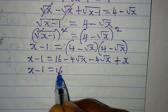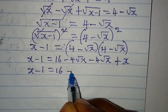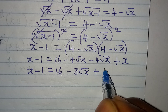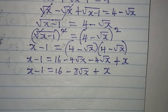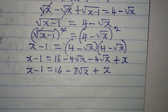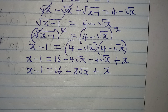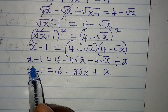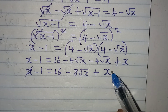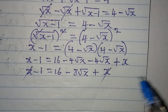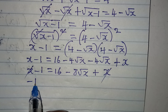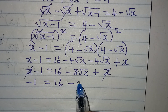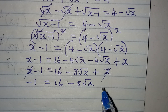So x minus 1 equals 16 minus 8 root x plus x. The x terms cancel from both sides, leaving us with minus 1 equal to 16 minus 8 root x.